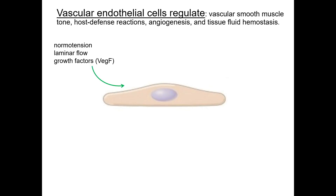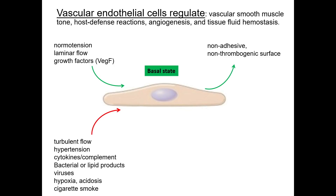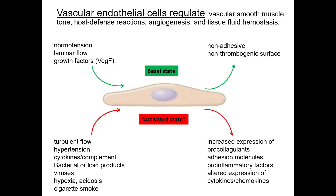Consider a basic endothelial cell under physiological conditions — normal blood pressure, good laminar flow, and the presence of pro-endothelial growth factors. It's now considered to be in a basal state. As a result, this cell is non-adhesive and prevents clotting, which is important for hemostasis. However, when conditions become suboptimal, such as with increased blood pressure, more turbulent blood flow, or the presence of bacteria, viruses, or toxins, these cells enter an activated state and turn on molecular pathways that increase adhesion and trigger inflammatory responses.